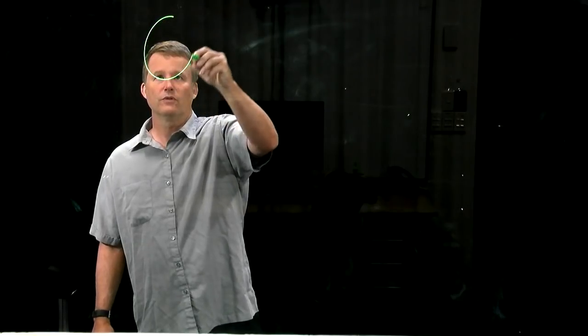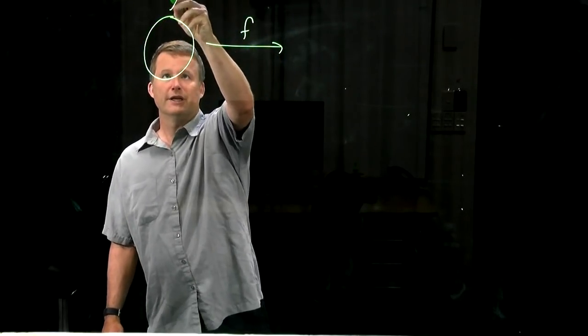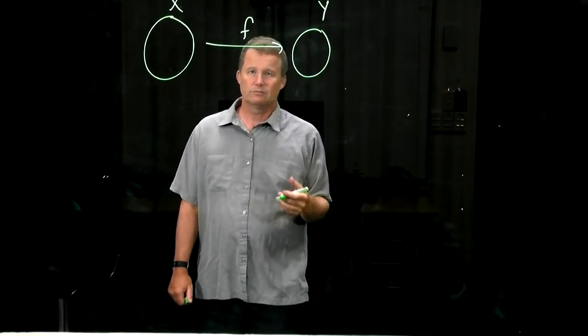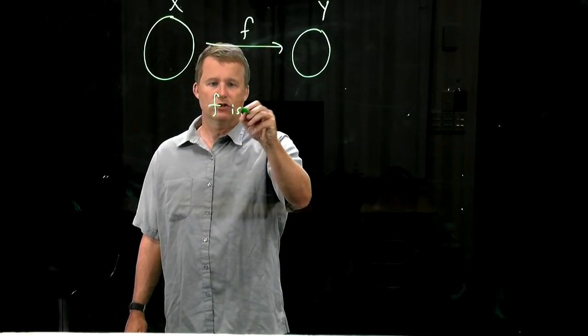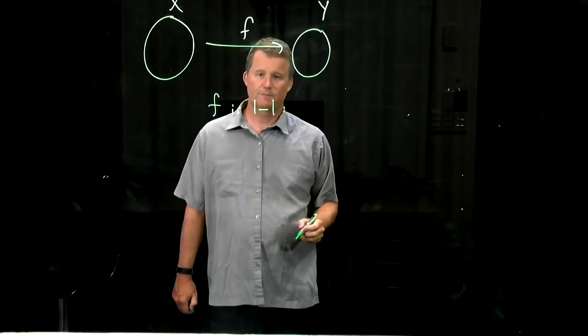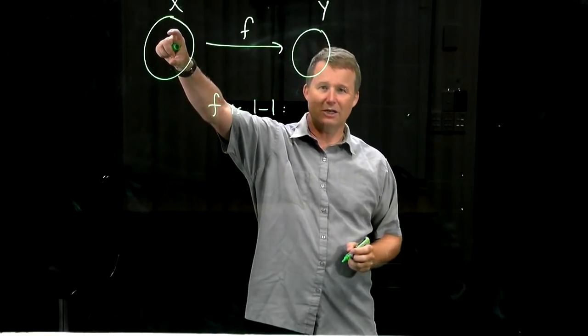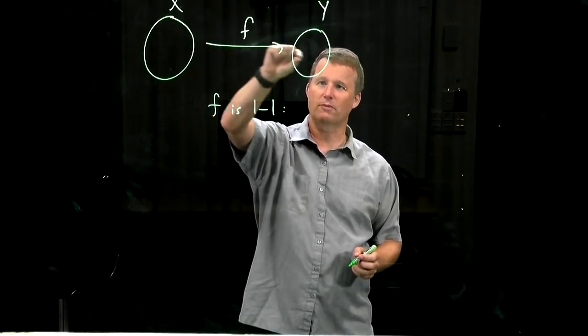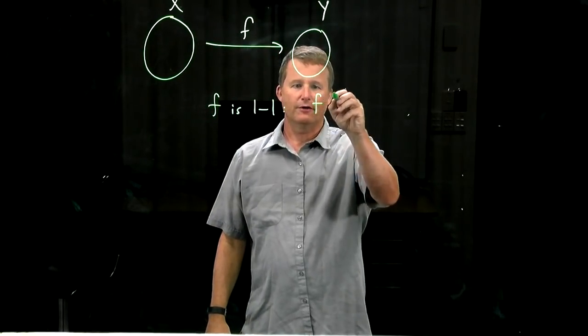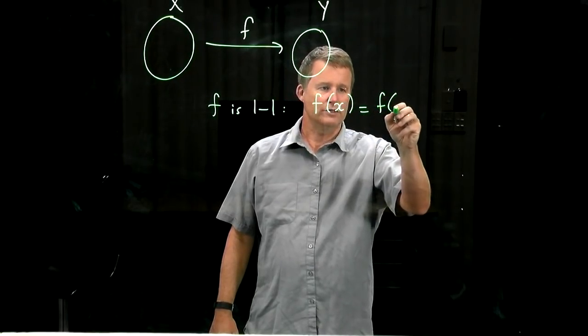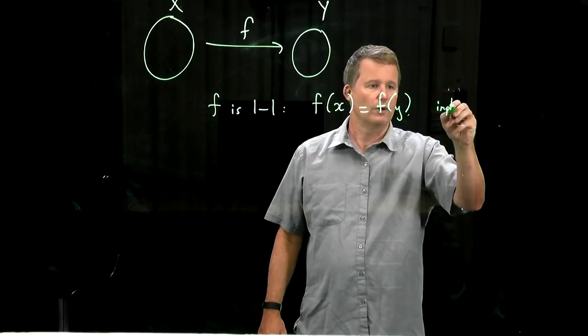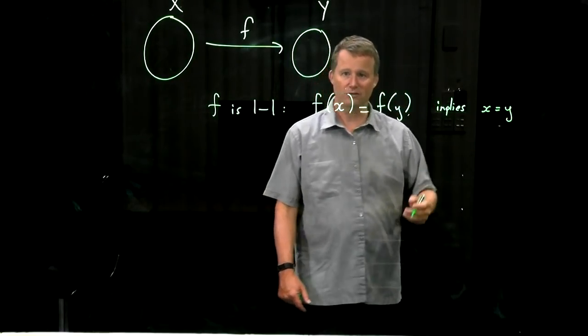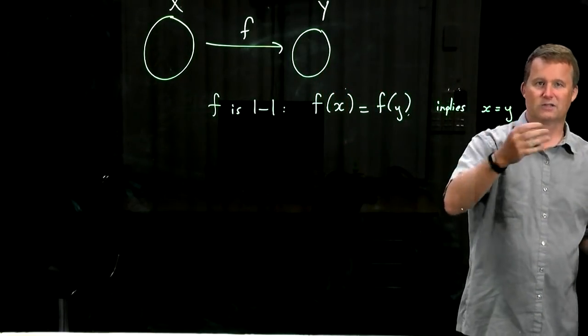So if you have a function from a set x to a set y, there are some basic properties that it may or may not have. One important one is what's called being one to one. f is one to one means that if you have different elements here, they go to different elements over here. They don't get collapsed down to the same. If they're not, then we say it's one to one. One way of saying that is that if x is not equal to y, then f(x) is not equal to f(y). Another way is the contrapositive: if f(x) equals f(y), then x must equal y.